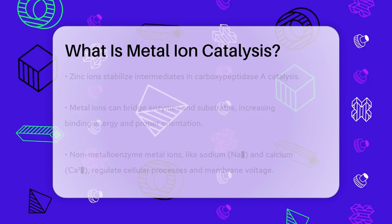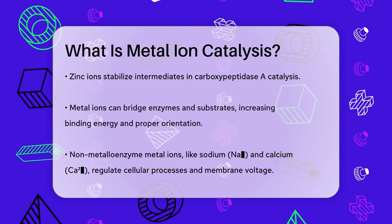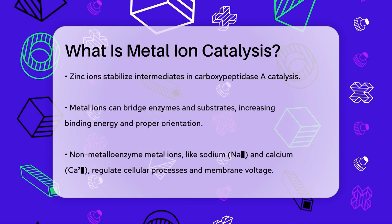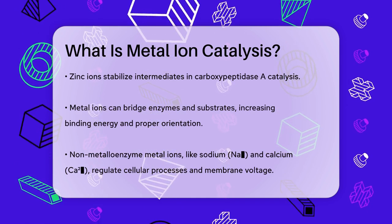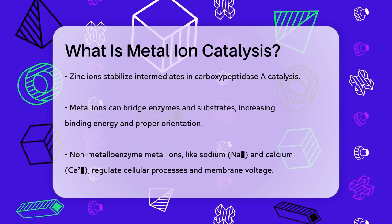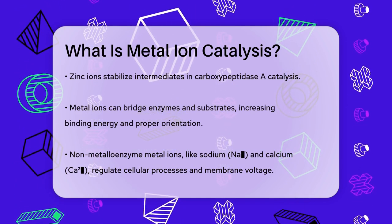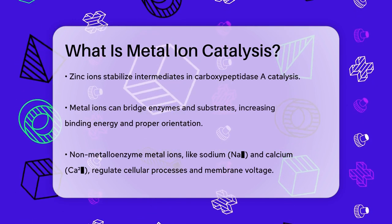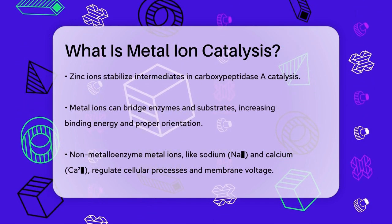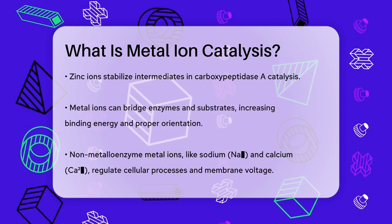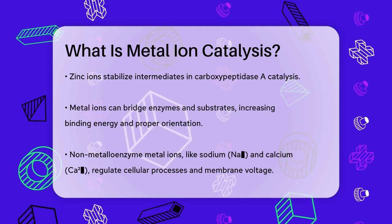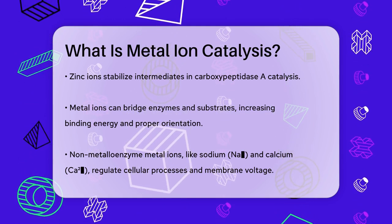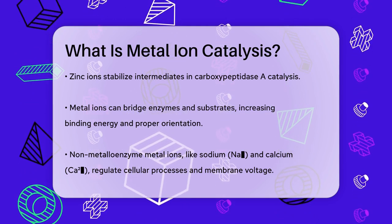Metal ions that are not tightly bound to metalloenzymes — such as sodium, potassium, magnesium, and calcium — also play important roles. These ions can control the electrostatic voltage across cell membranes and regulate various cellular processes. For instance, calcium ions are crucial for the transmission of neurotransmitters.